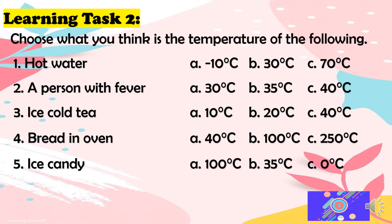Let us now answer learning task number 2. For number 1, hot water: the answer is 70 degrees Celsius. For number 2, a person with fever: the answer is 40 degrees Celsius. For number 3, ice cold tea: the answer is letter A, 10 degrees Celsius. For number 4, bread in oven: the answer is letter C, 250 degrees Celsius. And for number 5, ice candy: the temperature is 0 degrees Celsius.